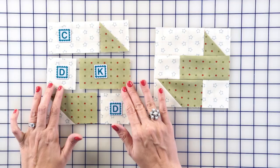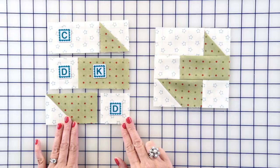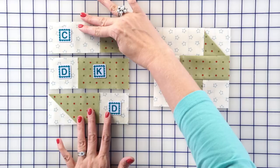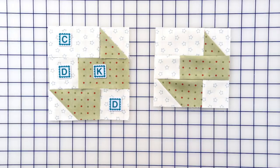Your partial half square triangle unit and your fabric D square, press toward the green. Then you're going to put these together and press toward the center, and you're going to have four corner units.